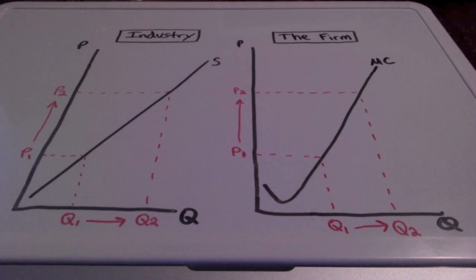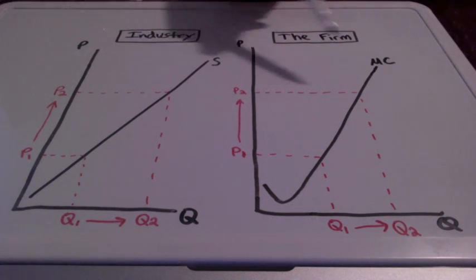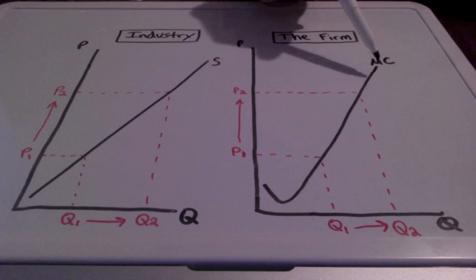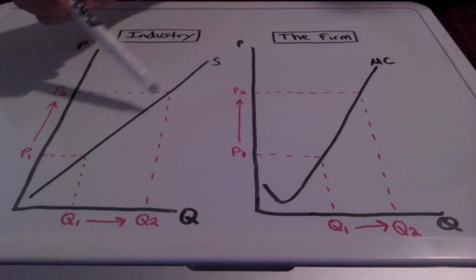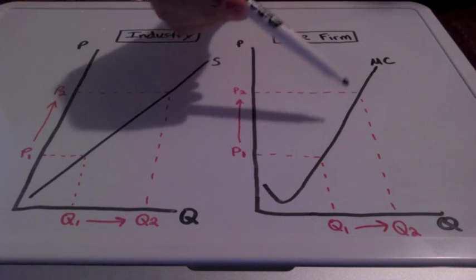In this example, we are going to examine the relationship between the supply curve and the marginal cost curve. As you can see, both curves are upward sloping.